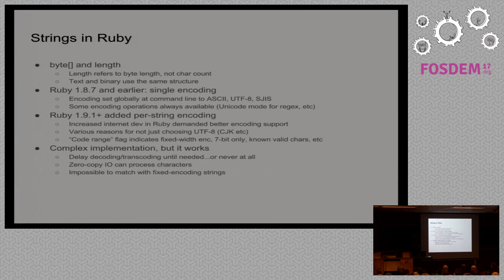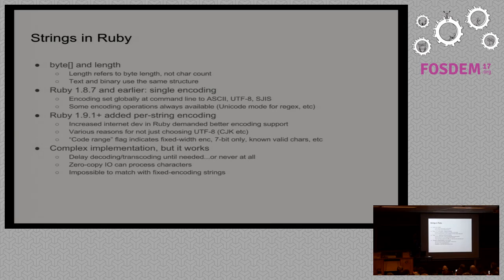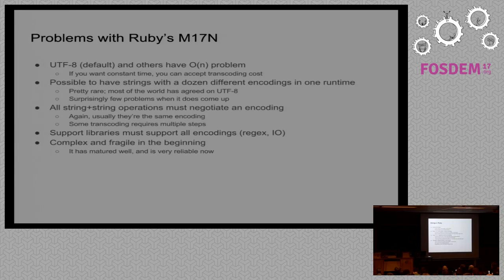In a world of many encodings, dealing with the wider internet and lots of files in different formats, they decided they needed something better. So in Ruby 1.9.1 and beyond, in addition to the byte array and its length, they added an arbitrary encoding per string. That might be UTF-8, UTF-16, Big Five, or EBCDIC — there are a lot of different encodings. They opted to let each string decide its own encoding, so when dealing with disparate data sources, you don't have to transcode everything to some intermediate. You can use mixed encoding strings throughout the system.